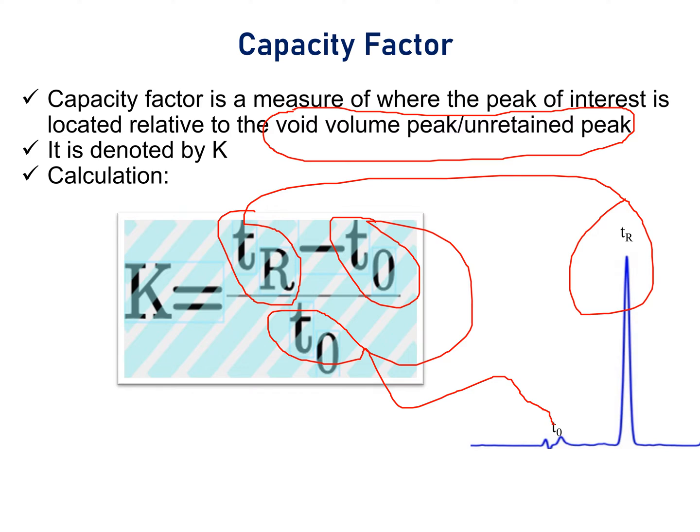If T0 is known and Tr is known, then capacity factor can easily be calculated. Now question is, what are the impacts of different chromatographic elements on the capacity factor? I am going to explain the same in the next slide.